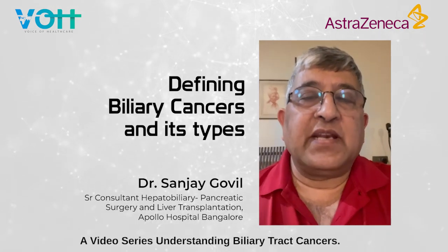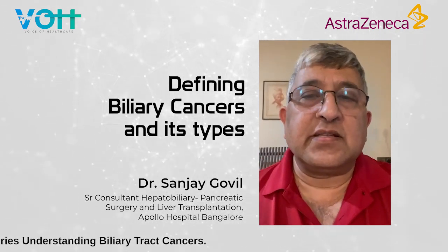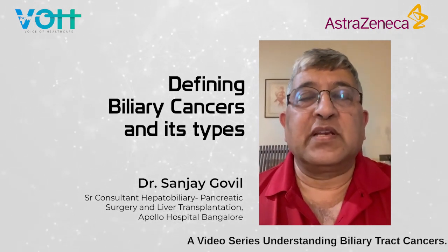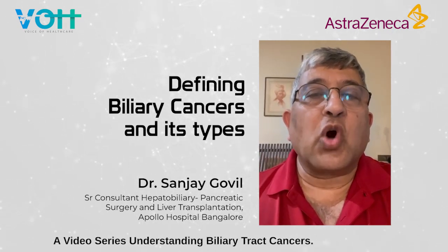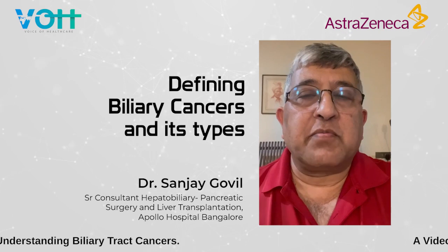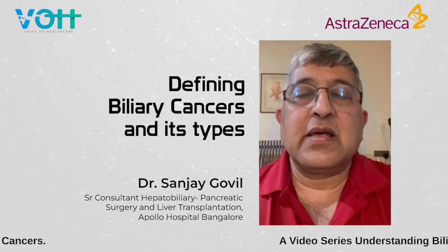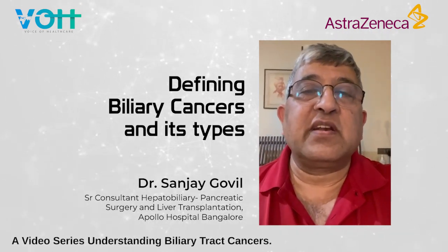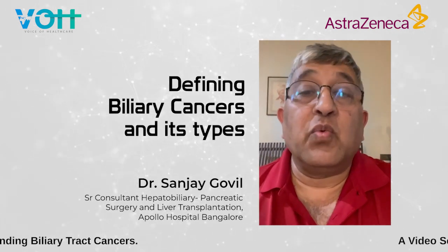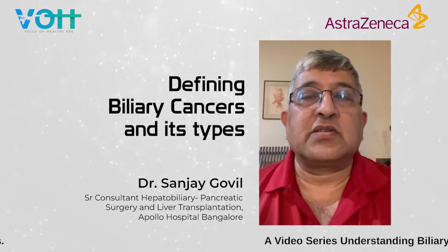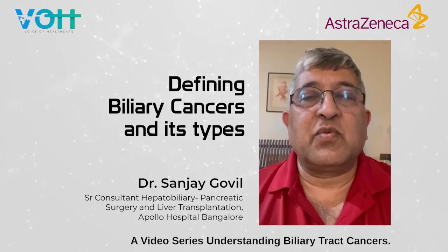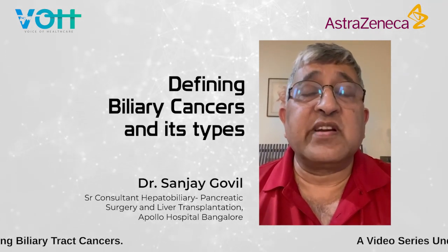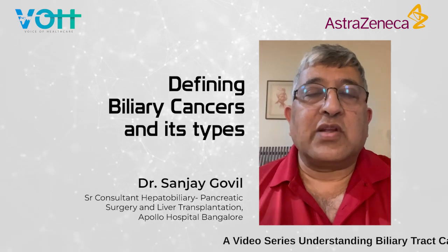Biliary tract malignancies are increasing in incidence worldwide. They are constituted by two main groups of malignancies. One is gallbladder cancer, the gallbladder being an appendage to the biliary tract. The other is what is called cholangiocarcinoma, which arises from the biliary tree itself. It may be within the liver — intrahepatic cholangiocarcinoma — at the hilum of the liver — hilar cholangiocarcinoma — or outside the liver, called distal or extrahepatic cholangiocarcinoma.